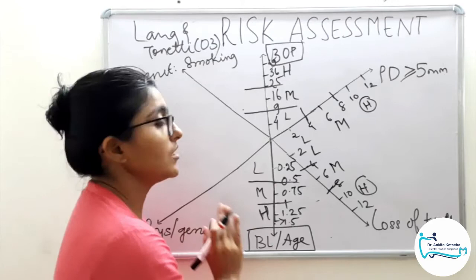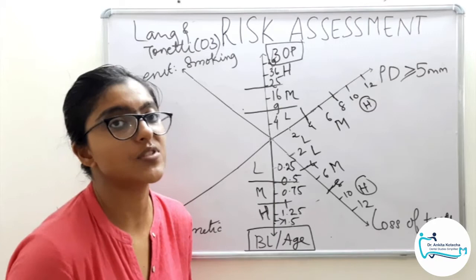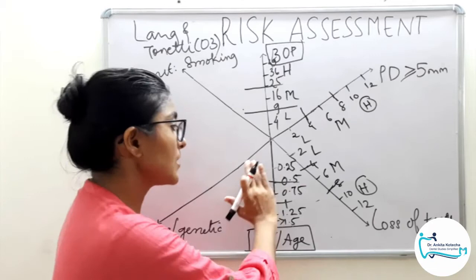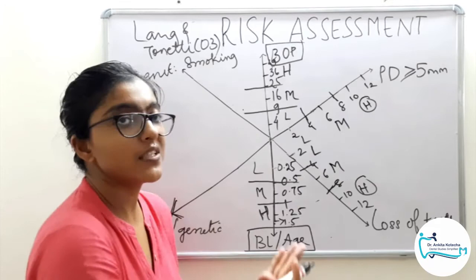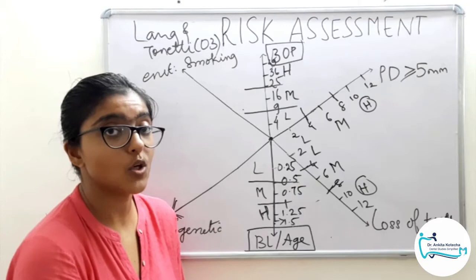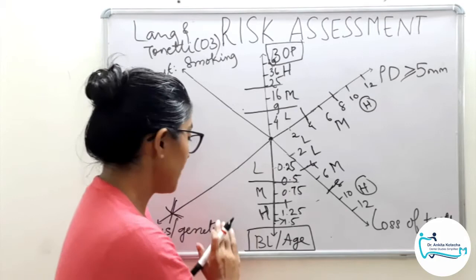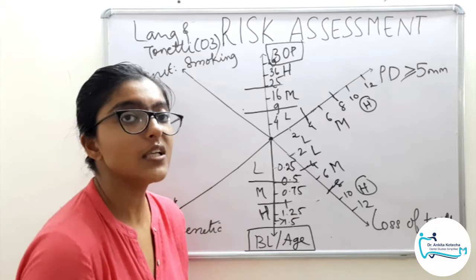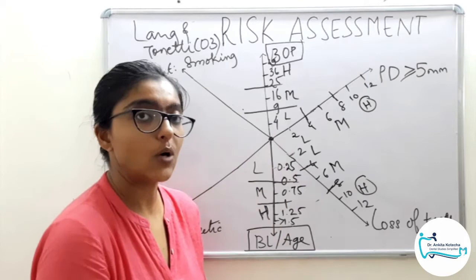Coming to the fifth indicator — systemic or genetic factors. Systemic diseases such as diabetes, whether present or absent, and genetics such as interleukin polymorphisms, if present or absent, are recorded. The scale is straightforward: if present, mark as high risk; if absent, it is not counted at all. Systemic disease is mainly diabetes — if diabetic status is uncontrolled or known, the patient is marked high risk. If absent or unknown, it is not accounted for.